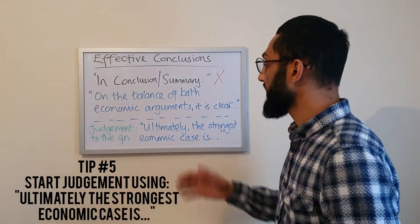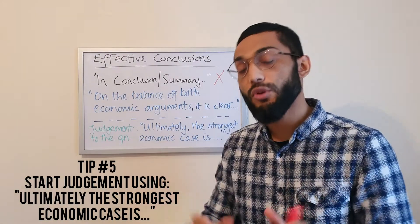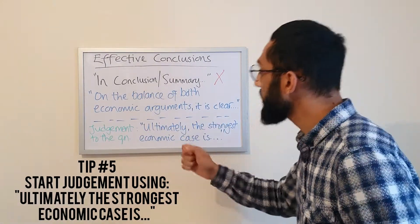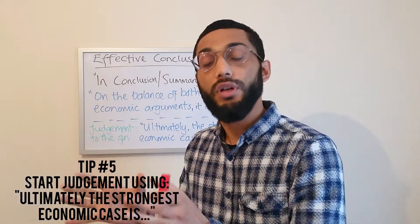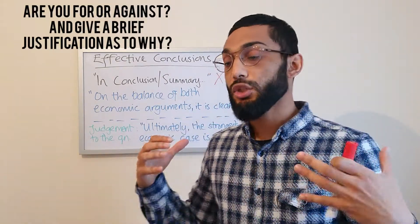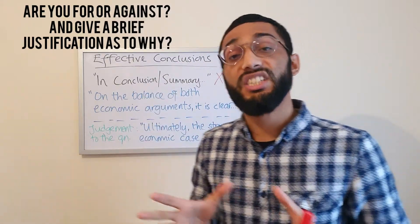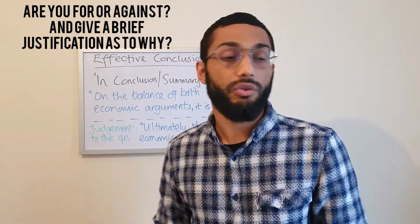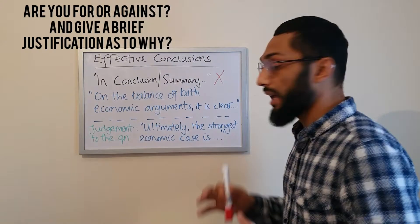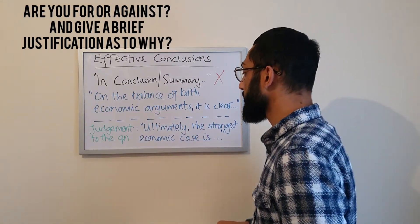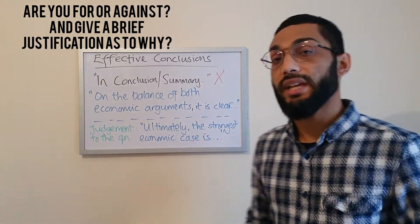One of the best ways to start your judgement is to say 'Ultimately.' So you balance and summarise both arguments, but then you say 'Ultimately, the strongest economic case is so-and-so.' Are you on the side of for or against? You have to make that judgement very clear in the conclusion. That is another form of evaluation where you suggest an economic policy or move the government can or should take. Starting this sentence by saying, 'I have assessed both, and ultimately, in my opinion, the strongest economic case is this.'